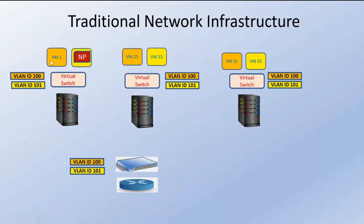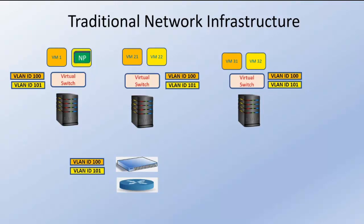So to send any network packet from VM1 to VM12 it has to go all the way down from the virtual switch, then the server, then the uplink switch, then the router, and then back to the same server before reaching VM12. Now if we configure this with a network virtualization infrastructure, the network packet will not even leave the server — the virtual switches themselves transfer the packet from VM1 to VM12.